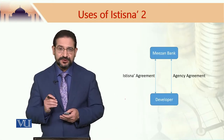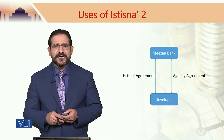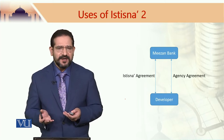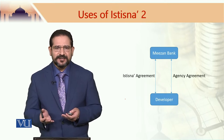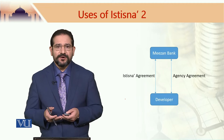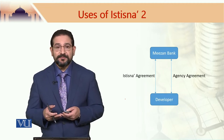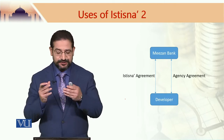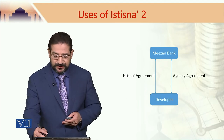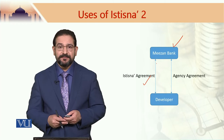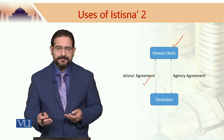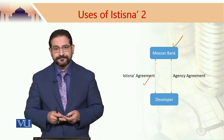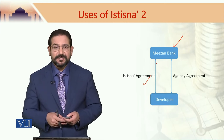This is how the transaction would take place. We are using the example of Mizan Bank because it was proposed by Mizan Bank. Otherwise, any Islamic bank can actually use this structure for property development and property selling. It is a very genuine real economy structure. Mizan Bank enters into an istisna agreement with a property developer. At the same time, it appoints this developer as its sales agent. This is the start of the structure.